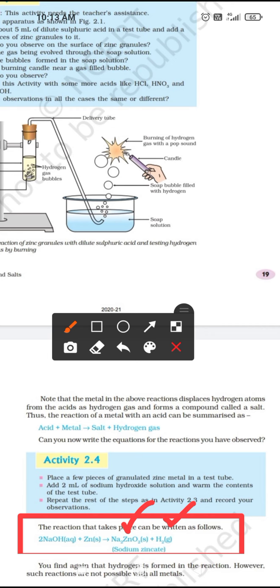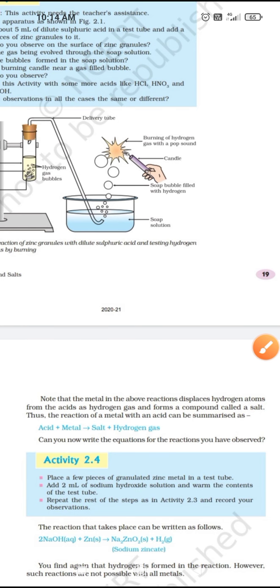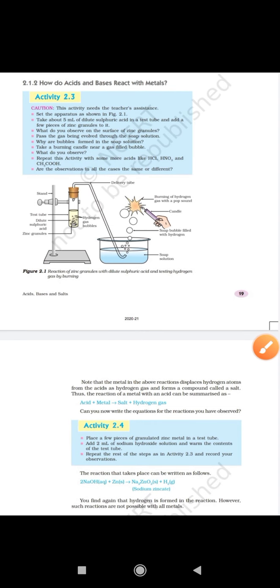these reactions are not possible with all metals. A few metals only react with bases to produce hydrogen gas, but not all metals. But in case of acids, maximum of metals react with acid to produce hydrogen gas and their respective salts. I hope now this topic is clear to you. In case of any query, you can leave a message in the comment box. Thank you so much.